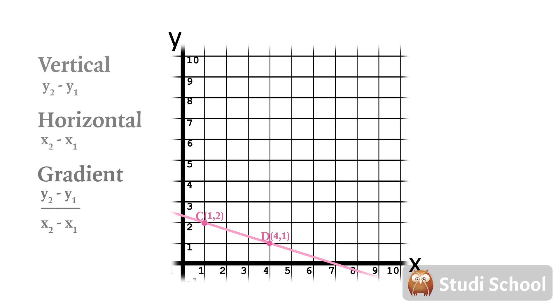Look at this line. It slopes the other way. Let's measure the gradient. Use the formula and let c be x1 and y1 and d be x2 and y2.